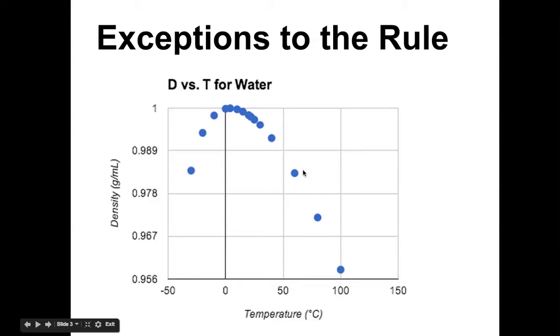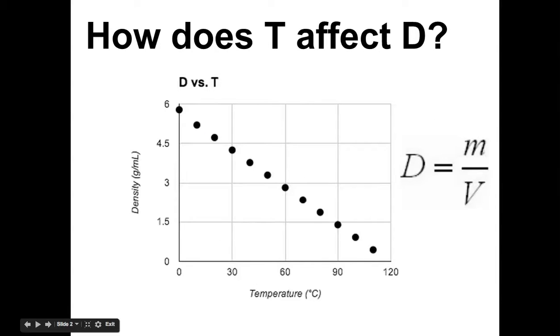However, there are some exceptions to the rule. For example, water, as it freezes, it actually becomes less dense, and that's why ice floats on water. But we're going to talk about why that is later, why this is actually an exception to the rule. But most things, for the most part, are going to fall according to this graph right here.